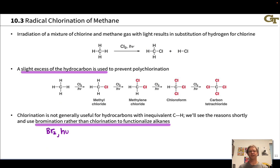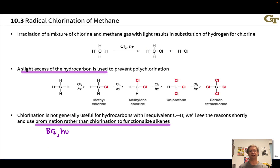Instead, more often than not, we use bromination, which is much more selective. It's slower, but it's much more selective, and that's synthetically advantageous. So for higher alkanes than methane, we use Br2 and light rather than Cl2 and light for halogenation of alkanes — still radical conditions, but using bromine rather than chlorine.